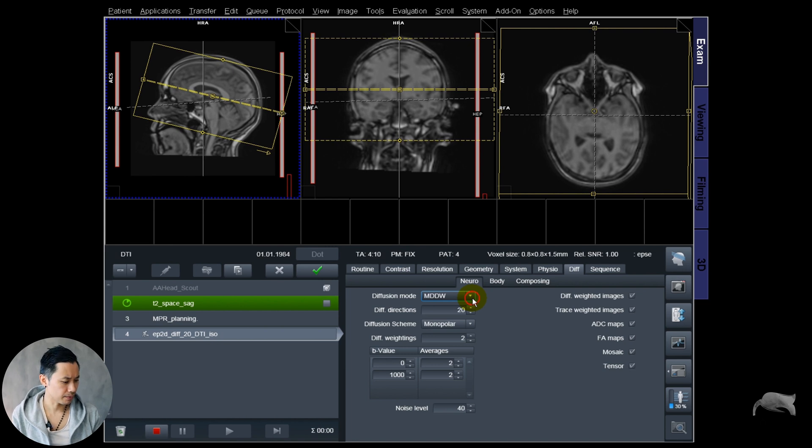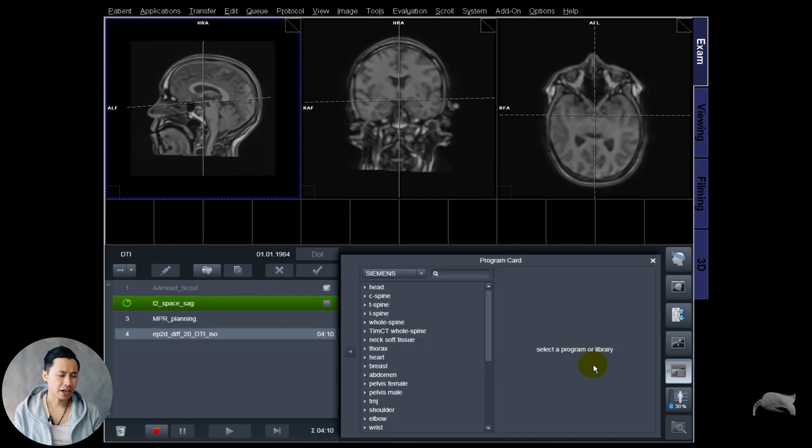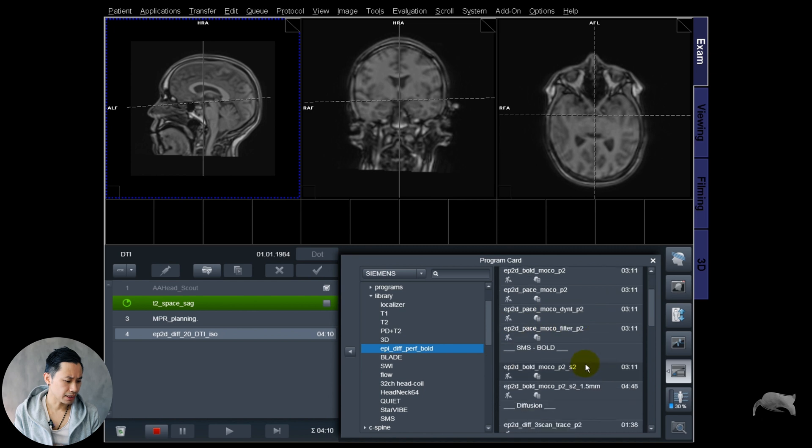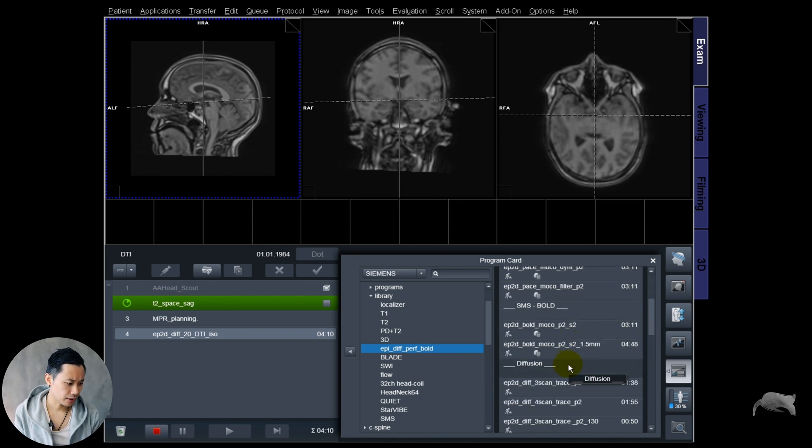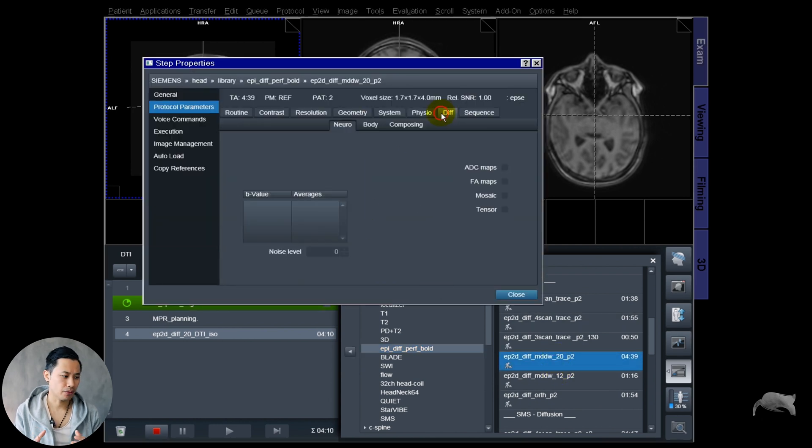You also have the different images and maps you can tick on or off. I'm ticking on all of these. If you go into the body tab you also have further maps here - FA, market map, exponential ADC maps. Where can you find the sequence? Go to Siemens tree, head, then library, then EPI diffusion. Down here you have diffusion MDDW, that's DTI. It's set up with 20 directions, 2 B values, and the maps are also there.